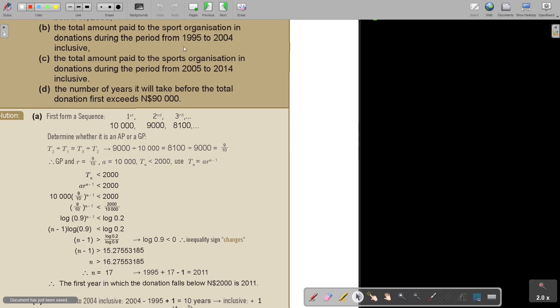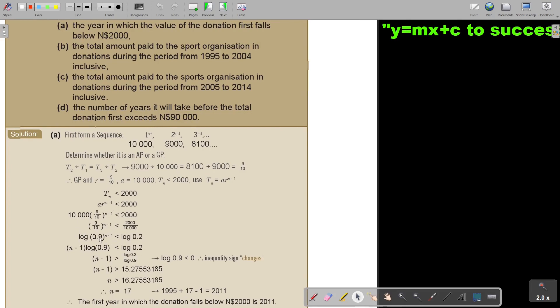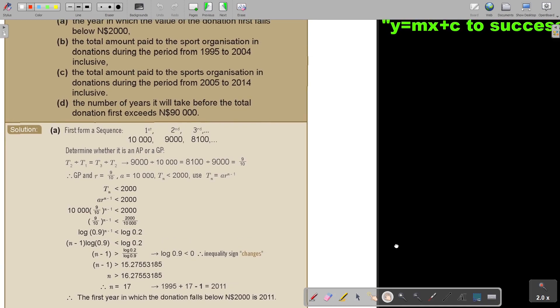So when it falls below 2,000, TN is below 2,000. So I just fill it in, substitute, and to get rid of that exponent, I just take logs on both sides. Then just test if that log 0.9 is negative, and it is negative. If it's smaller, then the inequality sign will change. And that's what happened.